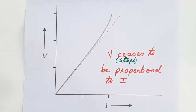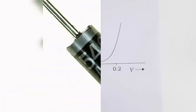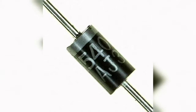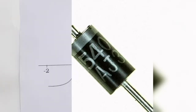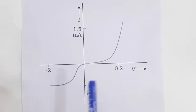Let us see another kind of deviation between V and I. There is a device in electronic circuits called a diode. This is what a diode looks like — it has tremendous applications in electronic devices like computers, amplifiers, etc. When current flows through a diode, the V-I graph looks like this — let us understand this graph.